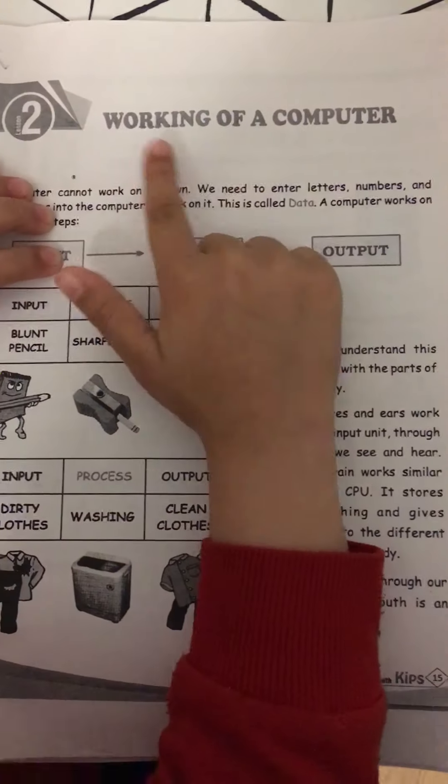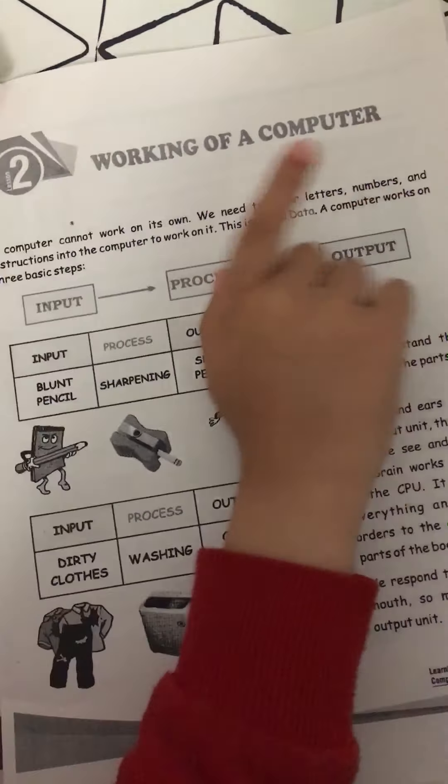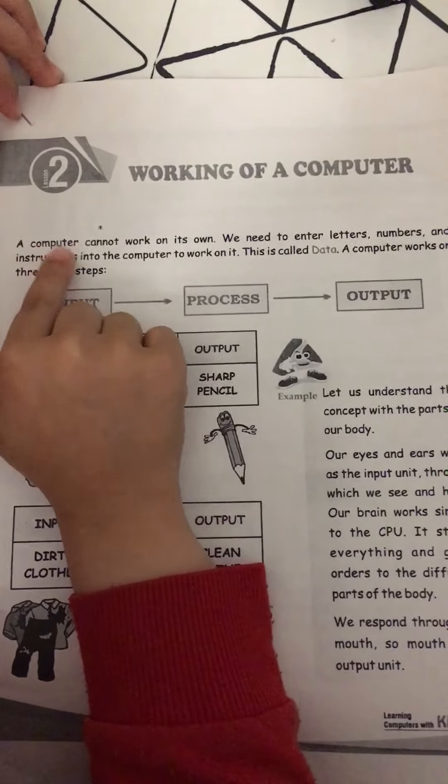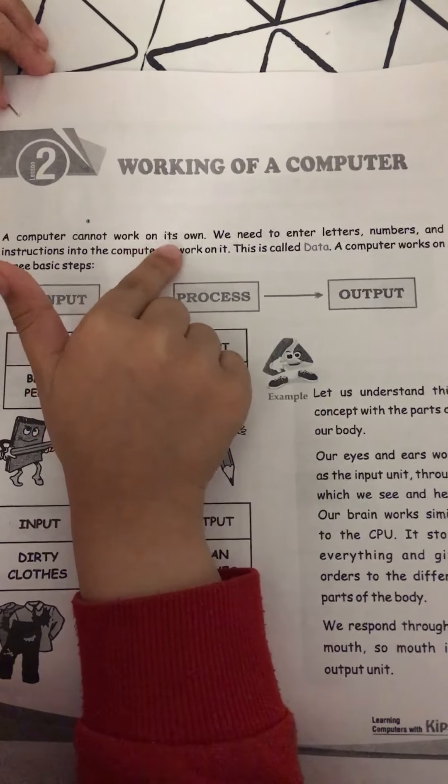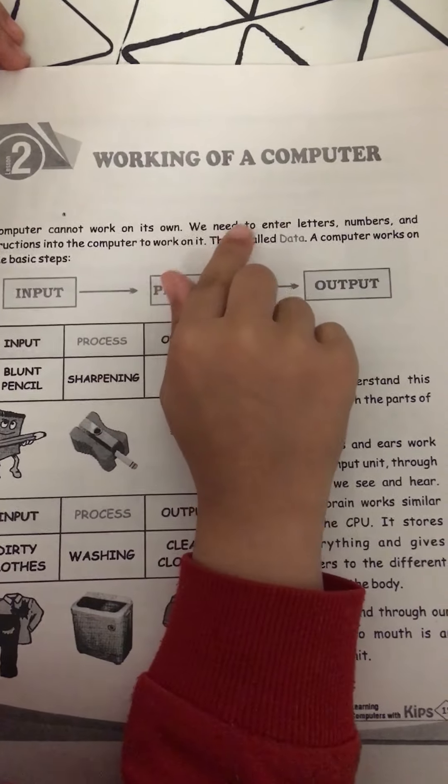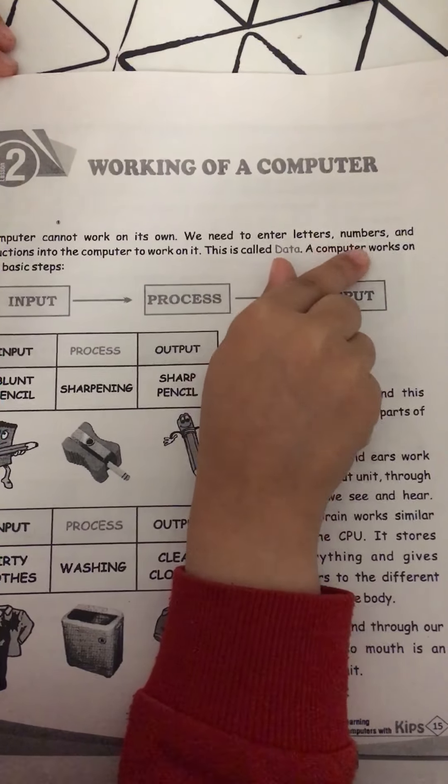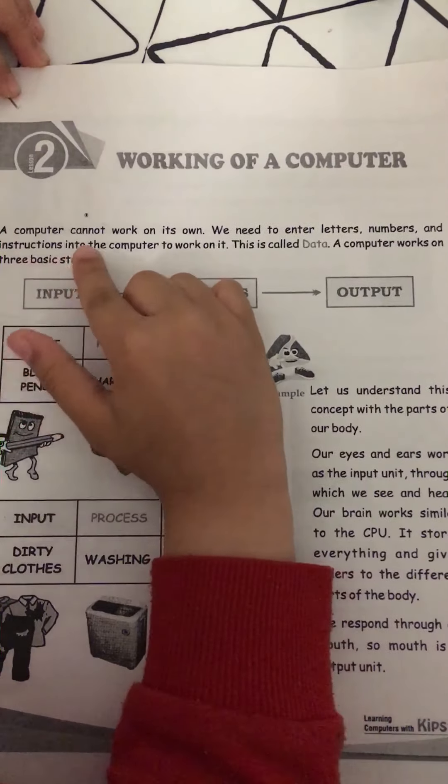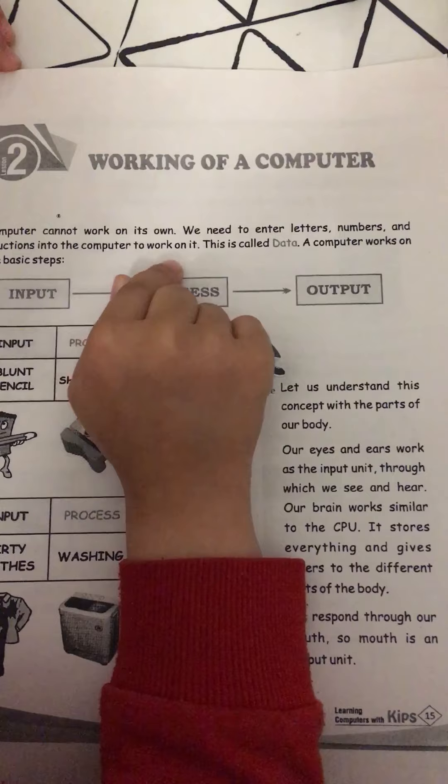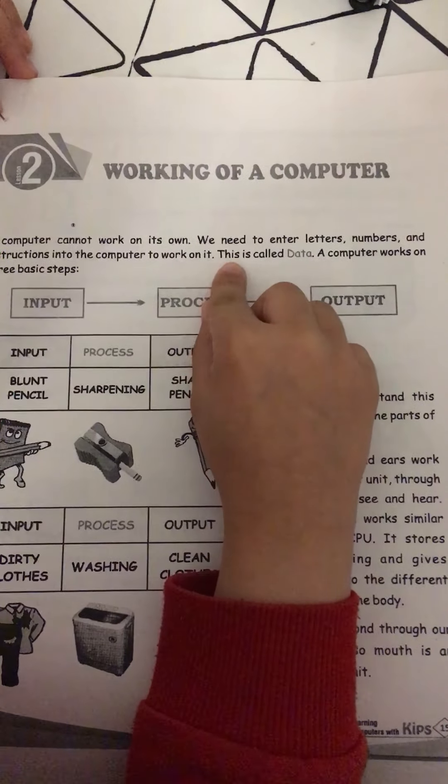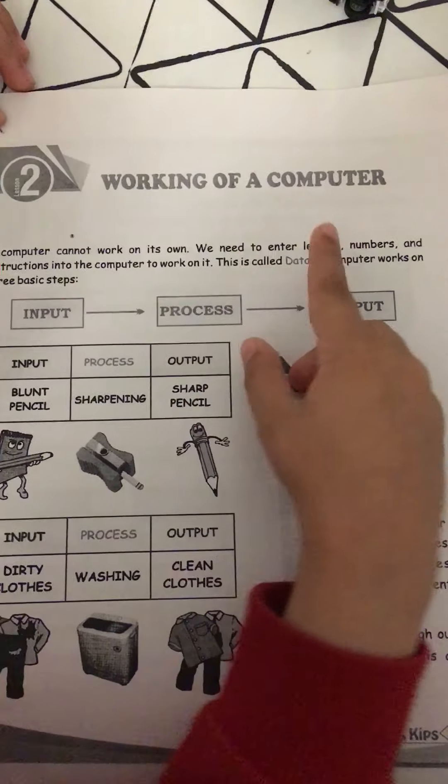Revenings are working of a computer. A computer cannot work on its own. We need to enter letters, numbers, and instructions into the computer to work on it. This is called data.